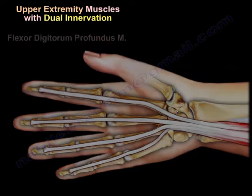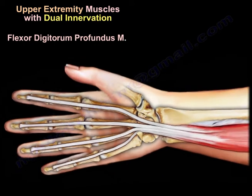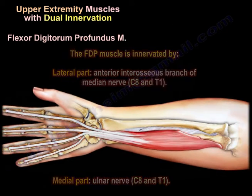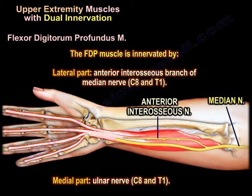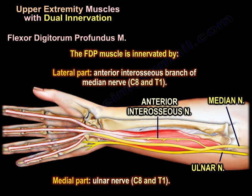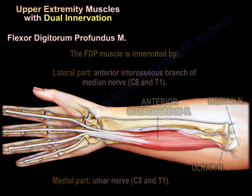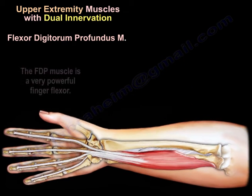The flexor digitorum profundus is supplied by the anterior interosseous nerve in its lateral part, while its medial part is supplied by the ulnar nerve. It is a very powerful finger flexor.